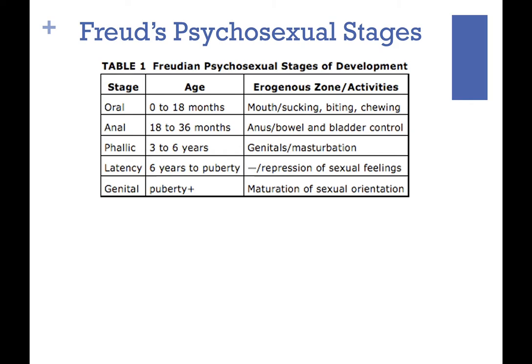The anal stage covers toddlers from about 18 to 36 months, when children become blatantly aware of their bowel movements and bladder control. Potty training becomes the central struggle during this stage, a source of frustration and guilt, especially when accidents lead to parental scolding.